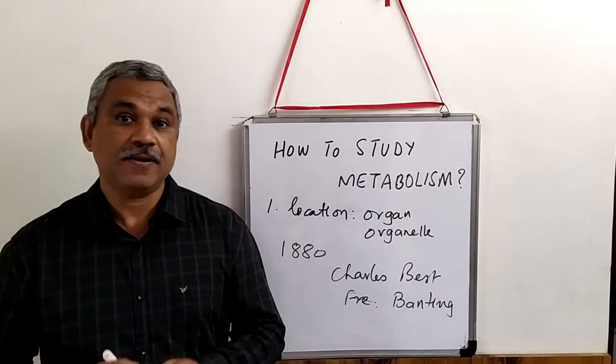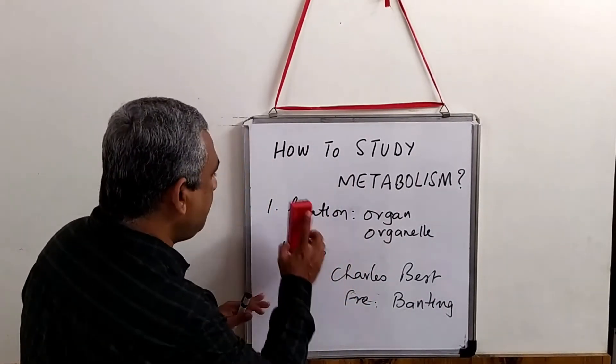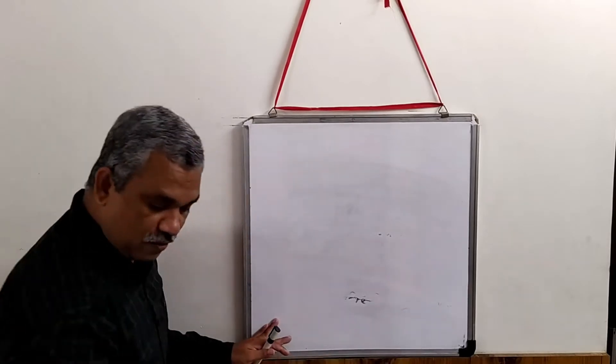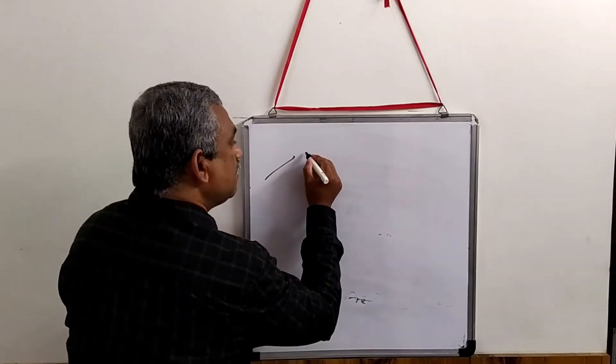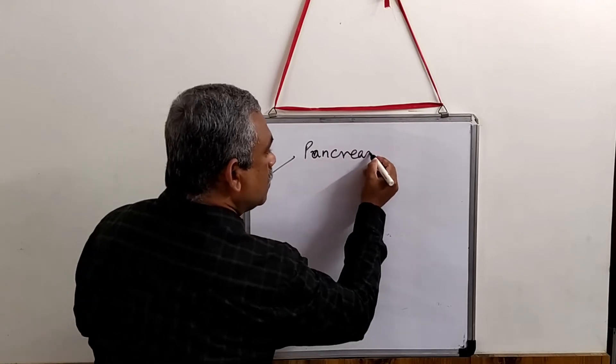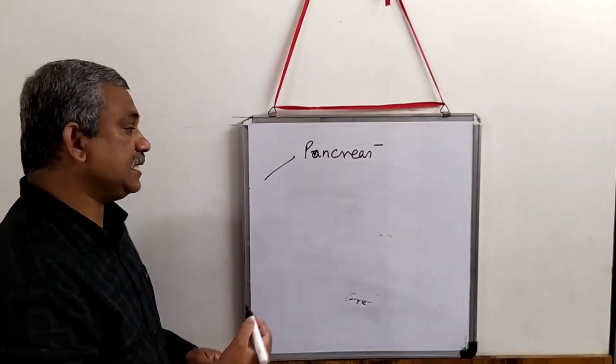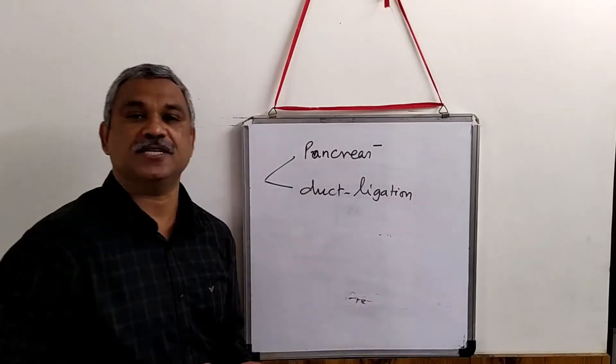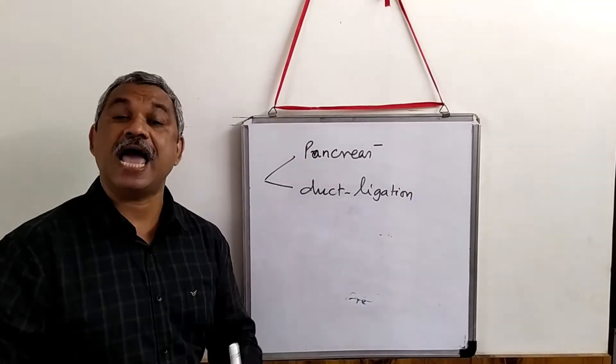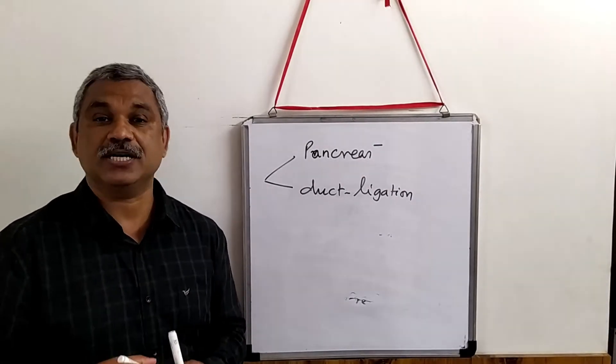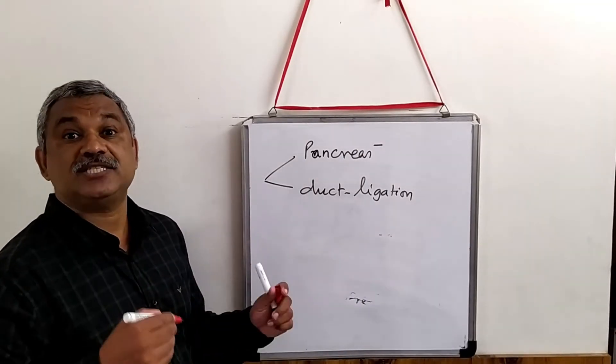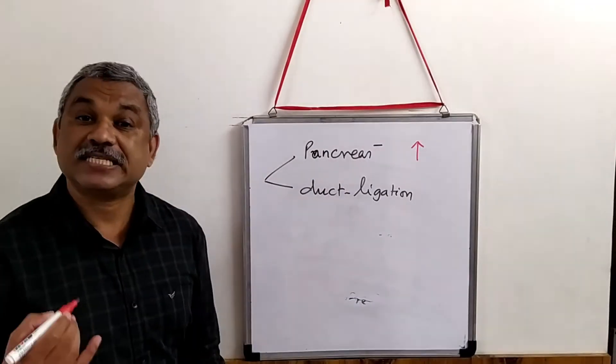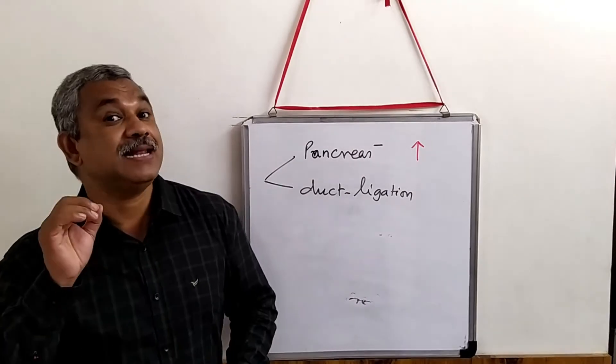What they did was two experiments. In the first experiment they surgically removed the pancreas. In the second category they did duct ligation. When they fed these dogs with glucose, they observed that in animals where the pancreas was removed, glucose concentration increased, whereas with duct ligation there was no fluctuation in glucose level.